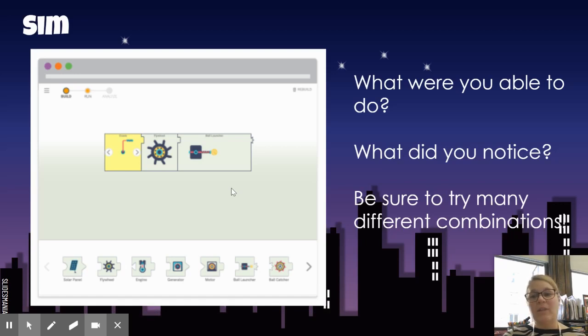And what do you notice? What things work together? What were you able to do? What weren't you able to do? Why didn't this one make this one work? I want you to think about all those things as you are building some electrical systems or some energy systems, depending on what you're doing.